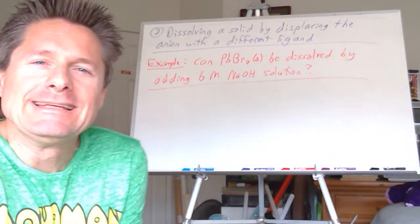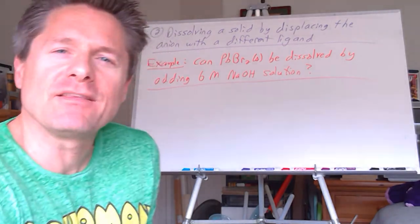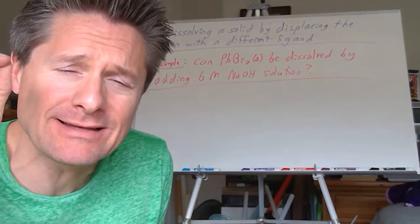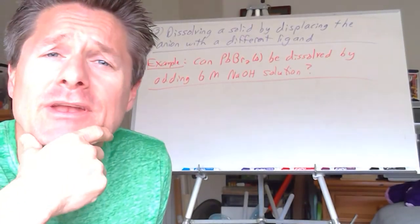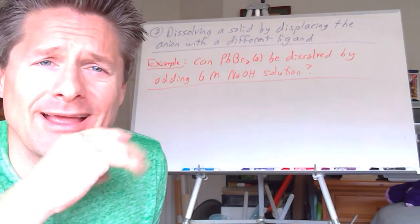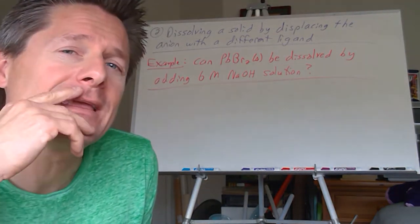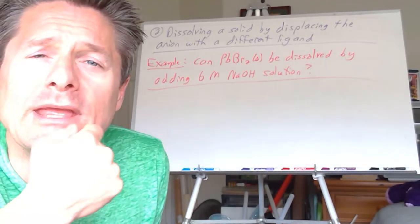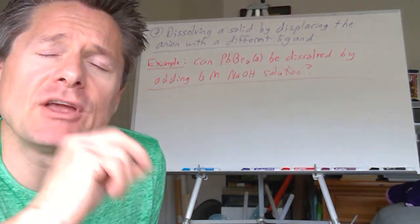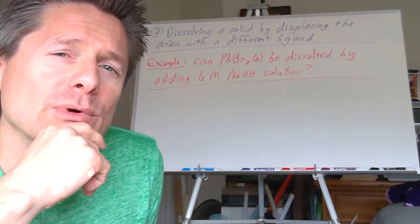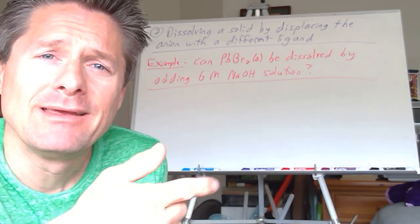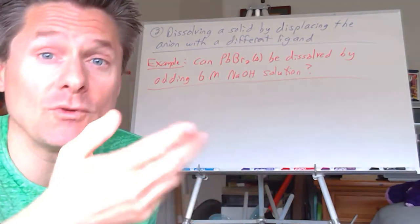All right, put your thinking caps on. We're going to do what we did on the last video with acid-base reactions - same thinking process. Once you get the thinking process down, I can give you an infinite number of combinations involving weak acids, weak bases, complex ions, and solids. It's the exact same thinking process: what's your starting equilibrium, what species do you have, what species are you adding to that equilibrium, and look at the four possible combinations. Could you form a solid? Could you form a complex ion? Could you have a neutralization reaction? Look at those things.